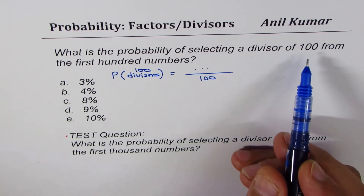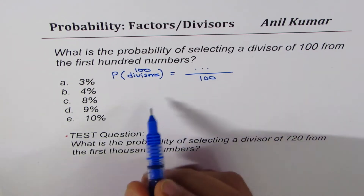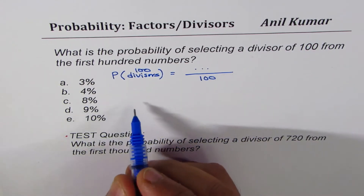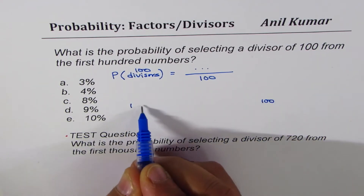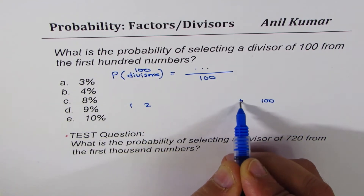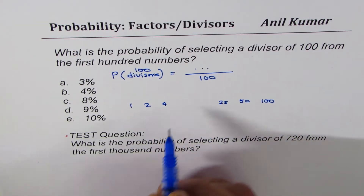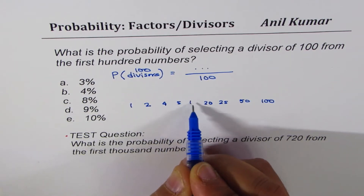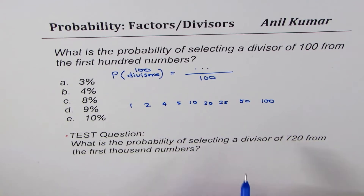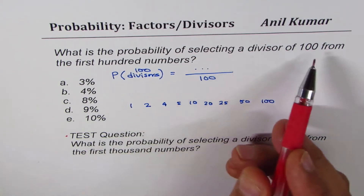In middle school you learned about factoring, so we can find all the factors of 100. Let's make a rainbow tree for factors of 100. We have: 1 × 100, 2 × 50, 4 × 25, 5 × 20, and 10 × 10. All these combinations give you 100, and they are all factors or divisors of 100.